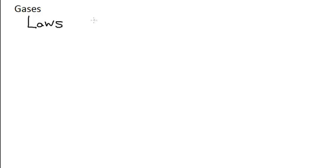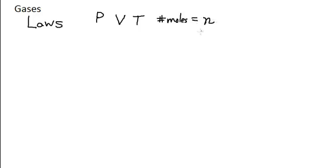The gas laws involve the four variables that we use in measuring gases: the pressure of the gas, the volume of the gas, the temperature of the gas, and the number of moles. When we deal with gases we usually use a lowercase n to stand for the number of moles, just like P is the variable for pressure.